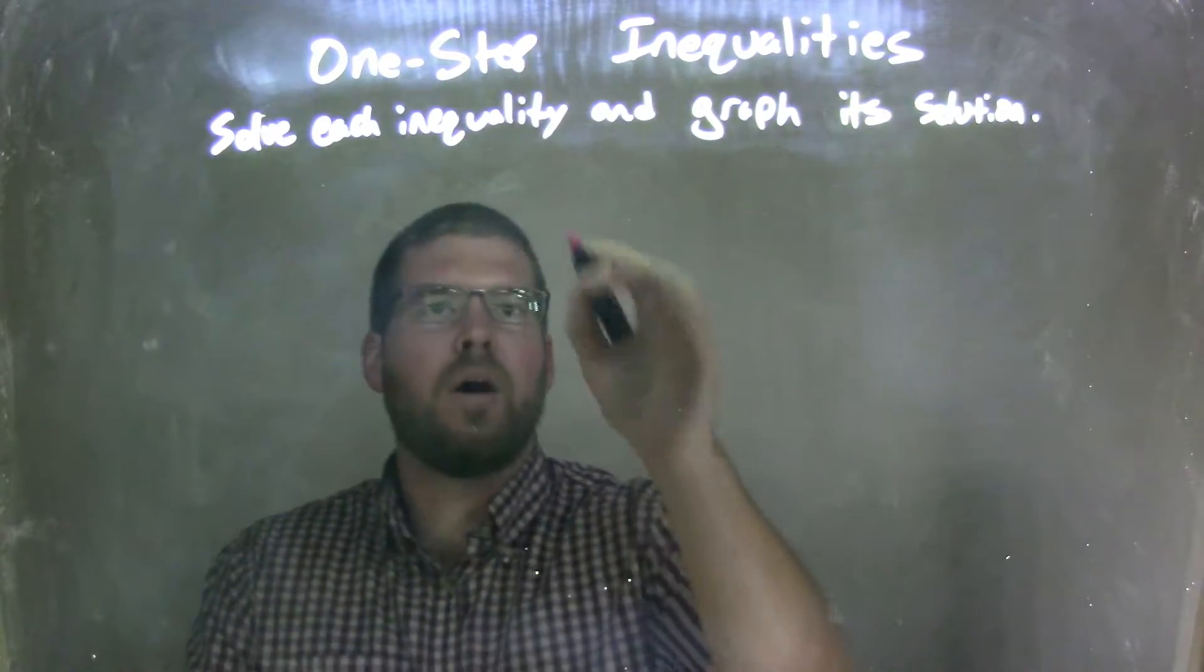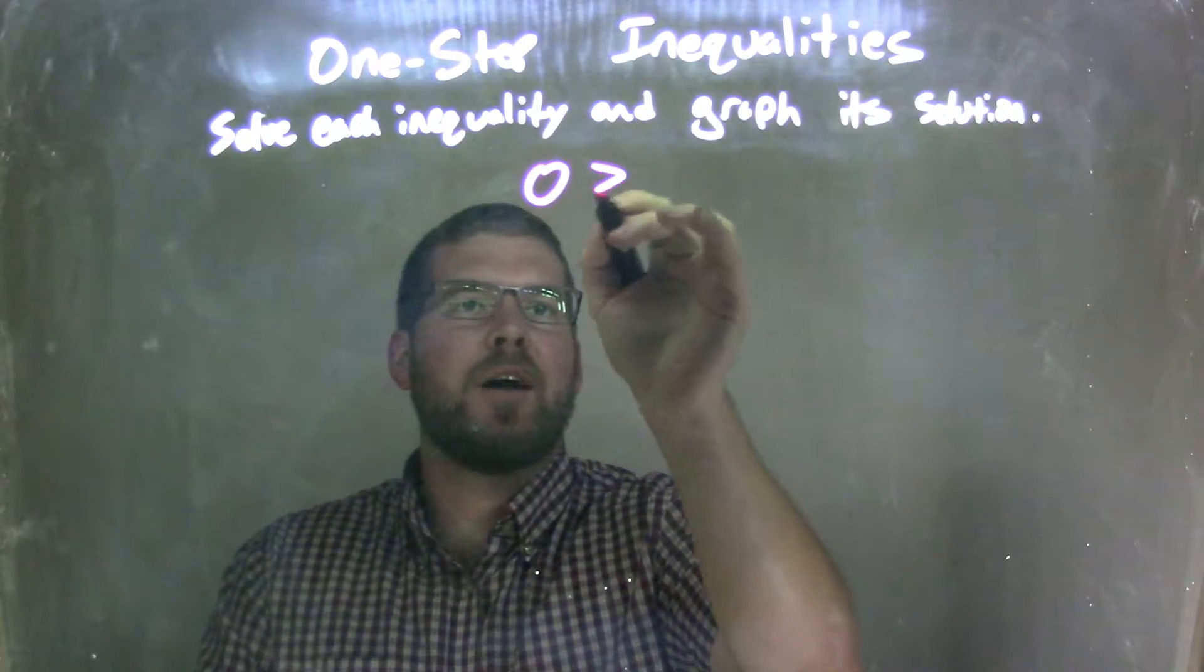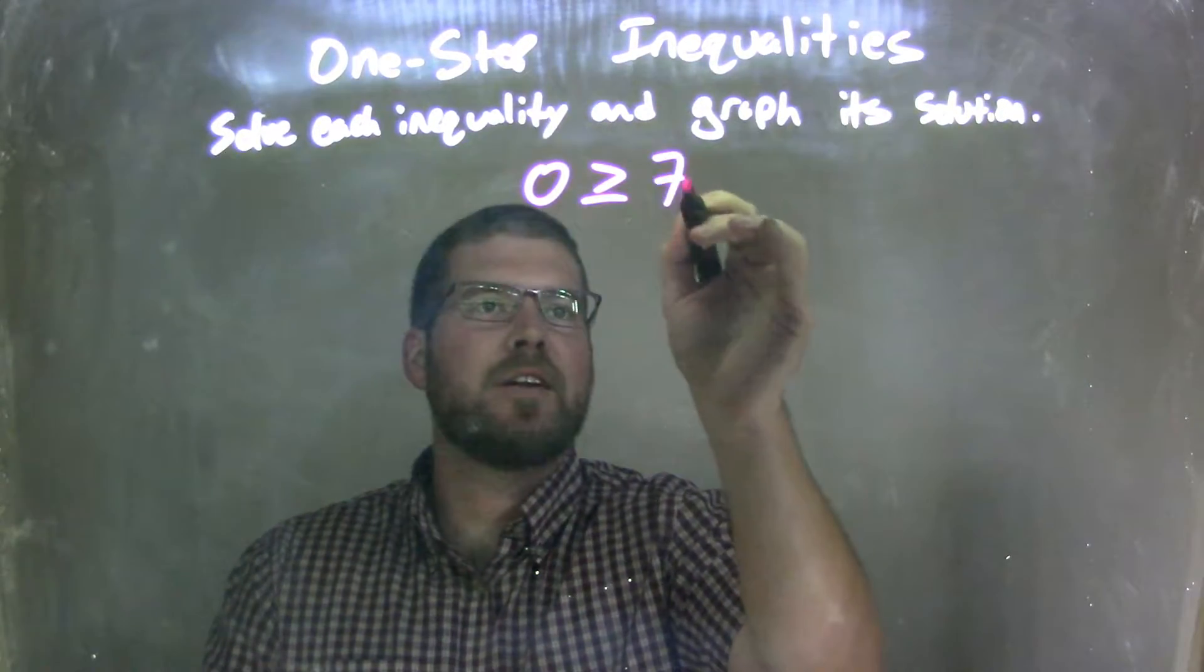So if I was given this inequality, 0 is greater than or equal to 7n.